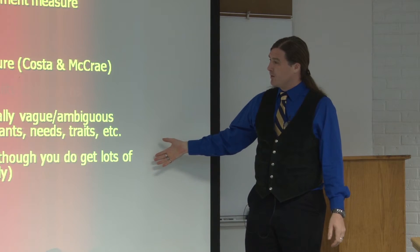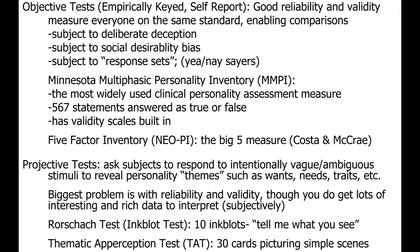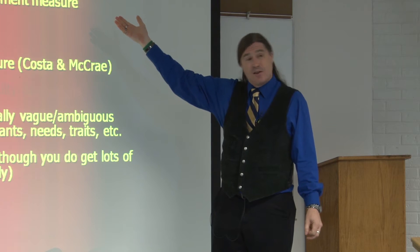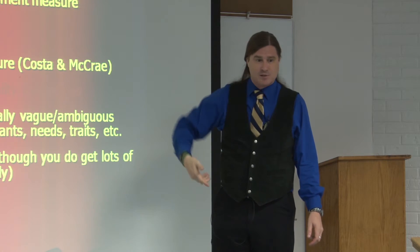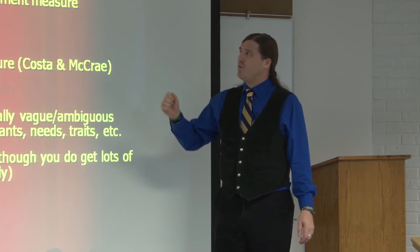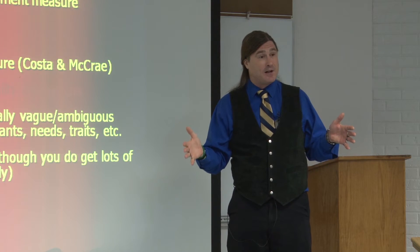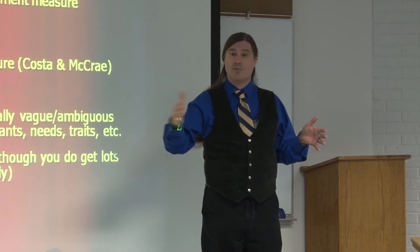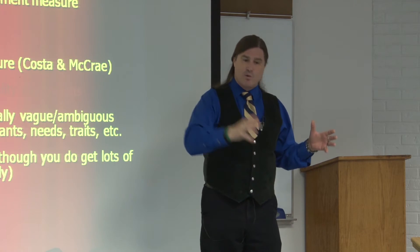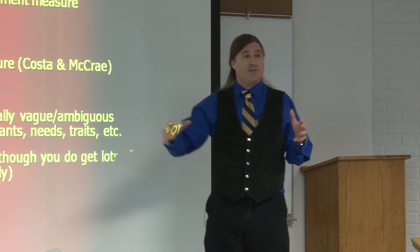The biggest problem with projective tests is reliability and validity. Because there isn't any objectivity to the stimulus, you could say anything — so how do you compare one person to another? With an objective test, people could deliberately deceive the test or respond in socially desirable ways, or answer fairly randomly. But if you account for all of that, it's pretty straightforward that you can have validity because the measurement standard is very clear, and it's easy to establish correlations or predictive validity.